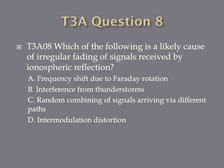Question 8: Which of the following is the likely cause of irregular fading of signals received by ionospheric reflection? A. Frequency shift due to Faraday rotation. B. Interference from thunderstorms. C. Random combining of signals arriving via different paths. Or D. Intermodulation distortion.